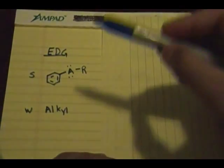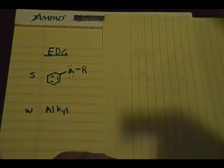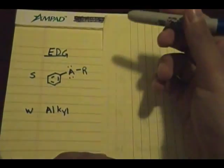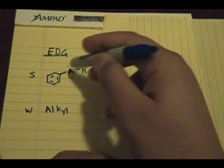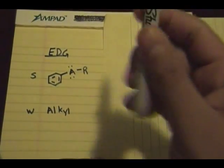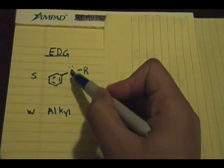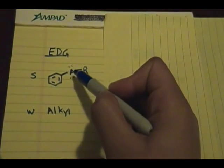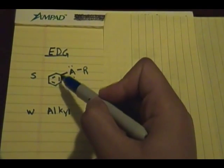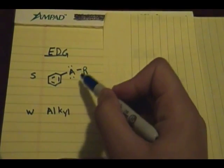The strongest type of electron donating groups — 'A' stands for atom — any type of atom that has lone pairs. If the atom directly attached to the carbon of the aromatic ring has lone pairs, it can donate electrons via resonance into the aromatic ring. That is what makes this substituent a very strong electron donating group.